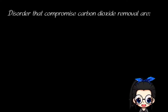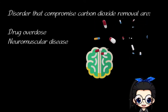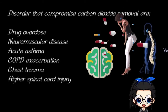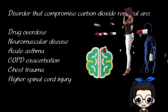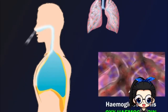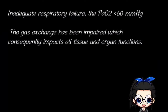Disorders that compromise carbon dioxide removal are drug overdoses with CNS depression like heroin overdoses, neuromuscular disease, acute asthma, COPD exacerbation, chest trauma, and higher spinal cord injury that play a role in respiratory muscle innervation. The respiratory system depends on adequate respiratory movements to exhale carbon dioxide and inhale oxygen. In adequate respiratory failure, the partial pressure of arterial oxygen is less than 60 mmHg, and the gas exchange has been impaired which consequently impacts all tissue and organ functions.